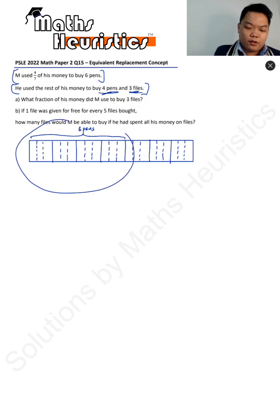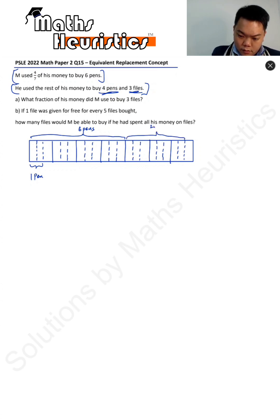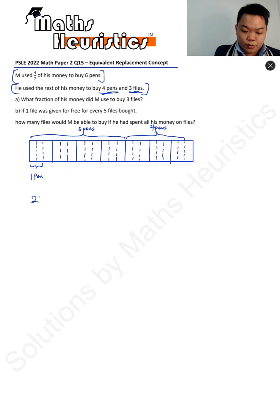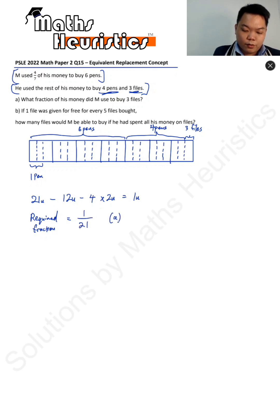This is part of what we do in model drawing, using appropriate methods for appropriate problems. If 12 units represents the cost of 6 pens, then 1 pen costs 2 units. So buying 4 pens would require 8 units. The working is: 21 units minus 12 units minus 4 times 2 units gives 1 unit remaining. That remaining 1 unit was spent on 3 fouls, so the fraction of money spent on 3 fouls is 1 out of 21. This resolves Part A.